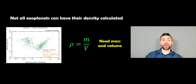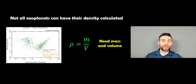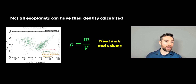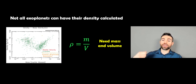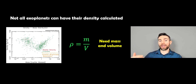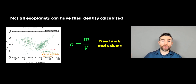Not all exoplanets have their density calculated. If you go on the exoplanet archive, you can get lots of different pre-generated plots of all different parameters of the planets discovered so far. This one here shows the density against the mass in Jupiter masses. It's not a large collection, so not every planet has their density calculated. The reason is you need to be able to find both the mass and the volume, and it's not possible to calculate both from all planets. Normally you get one or the other depending on the detection method.